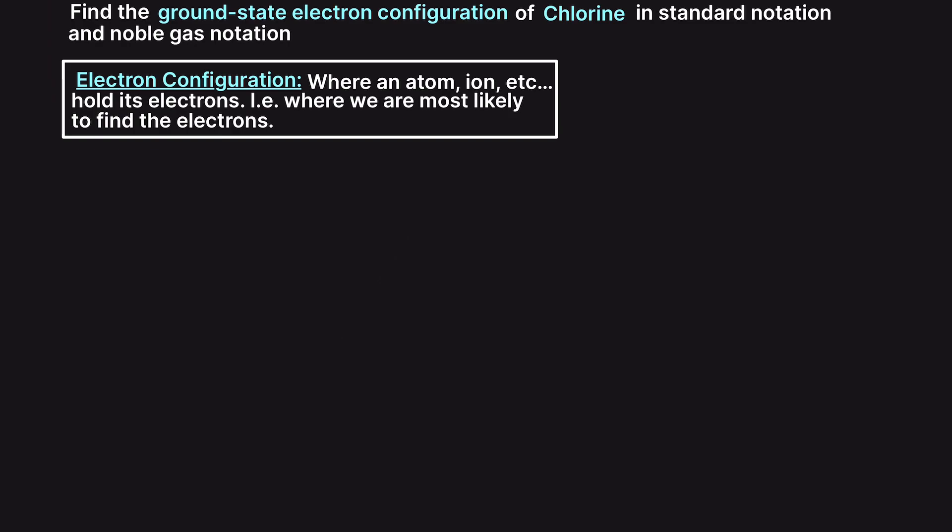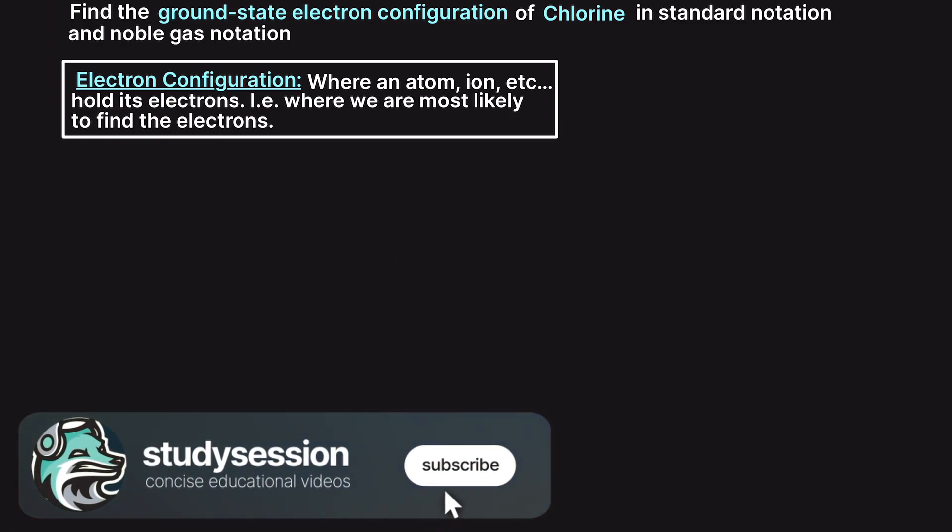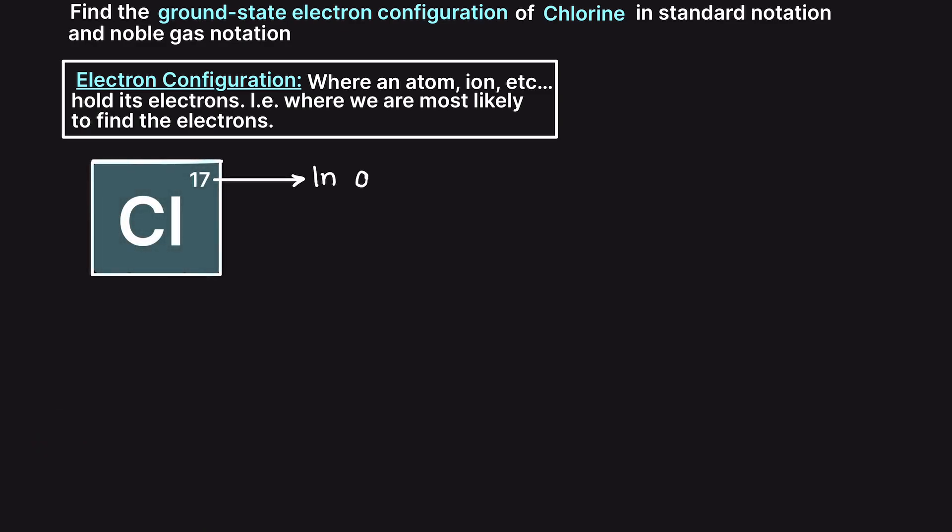So to solve this, the first thing we need to do is look at our periodic table and see how many electrons a chlorine atom has in its ground or unexcited state. Looking this up, we can see that chlorine is number 17 on the periodic table, meaning that in a neutral state, no positive or negative charge, our chlorine atom will have 17 protons in its nucleus and thus 17 electrons surrounding that nucleus to maintain the neutral charge.